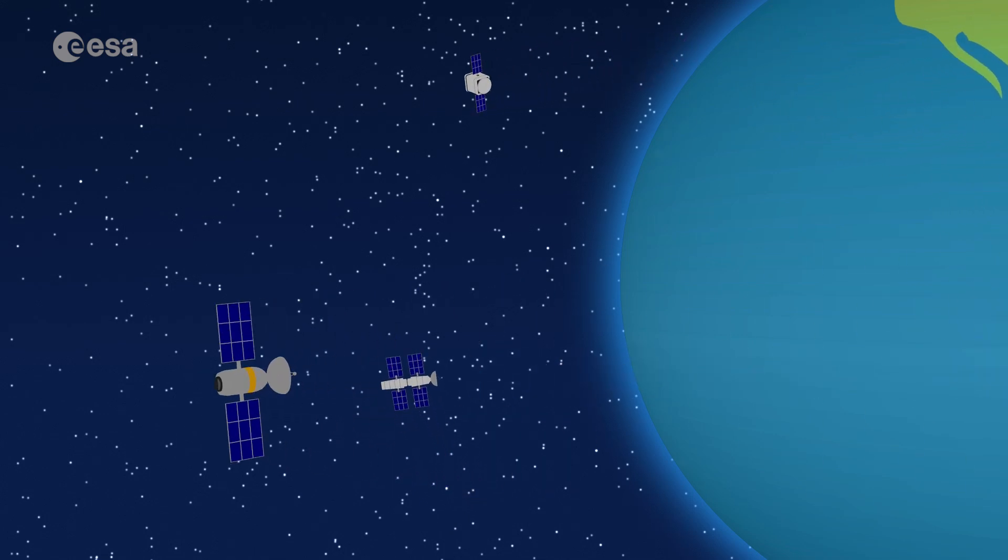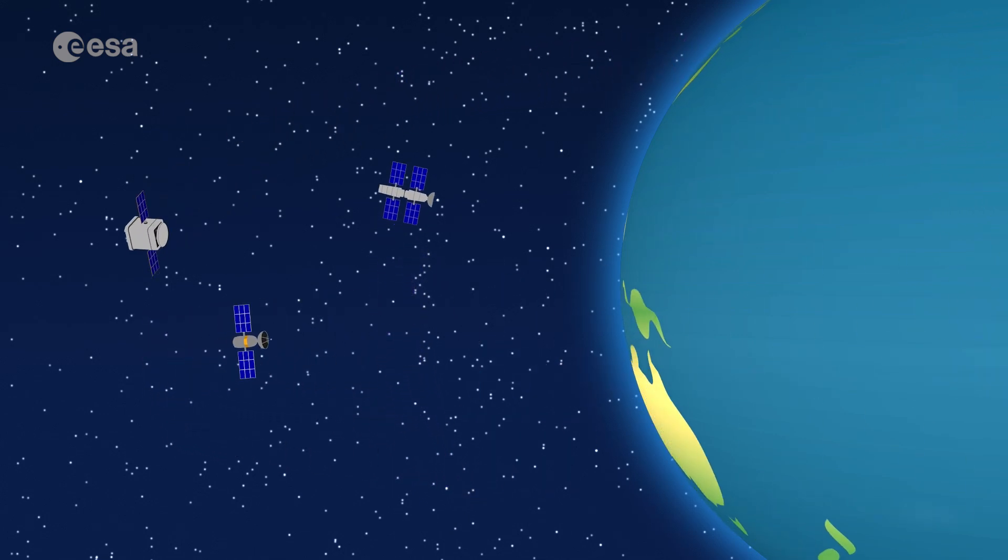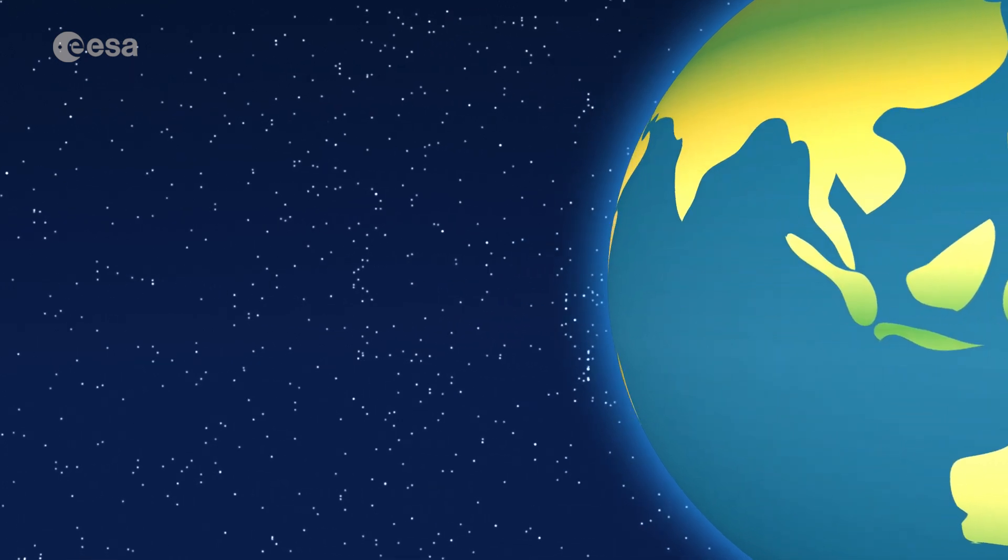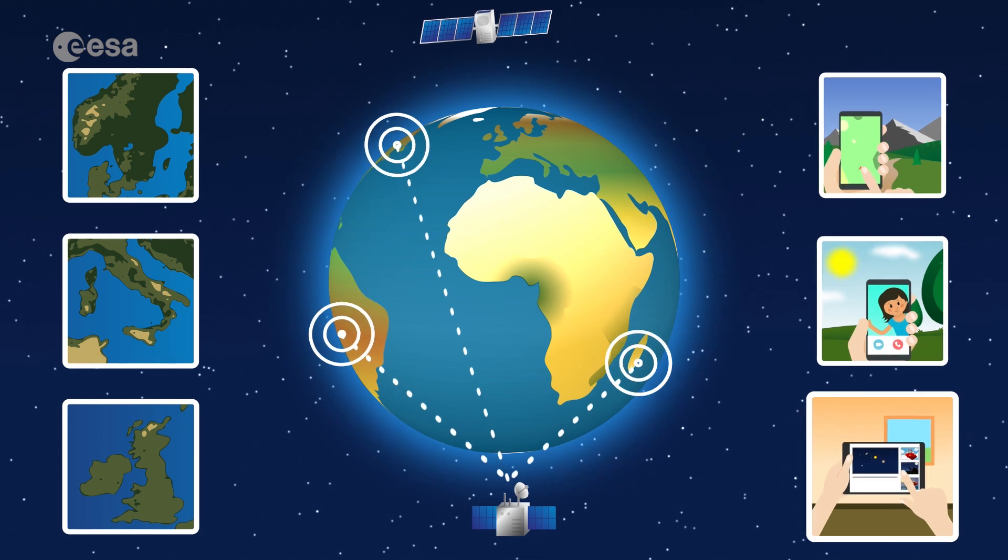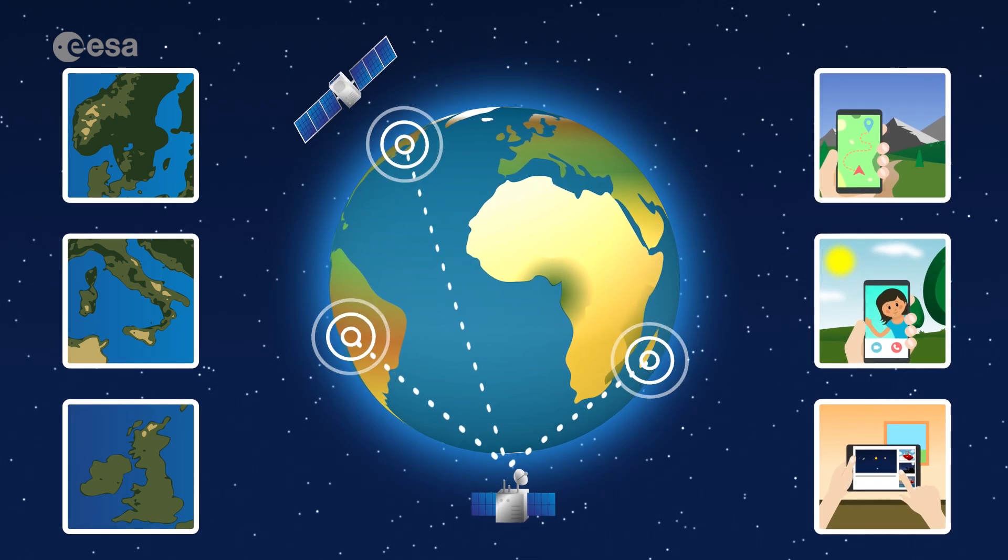But above all, these satellites need to be close to Earth in order to do their jobs, like taking pictures of Earth or connecting people who live in isolated areas of the world to the internet.